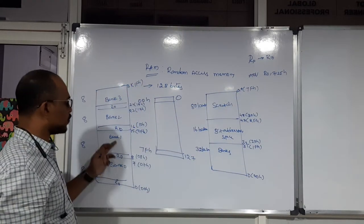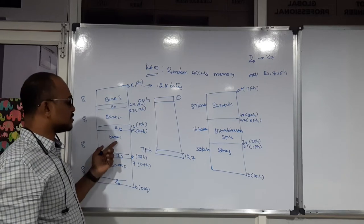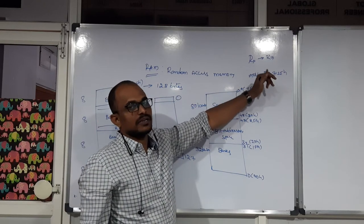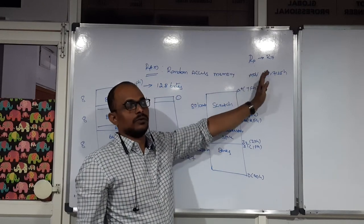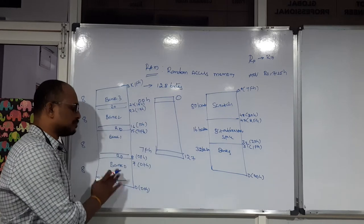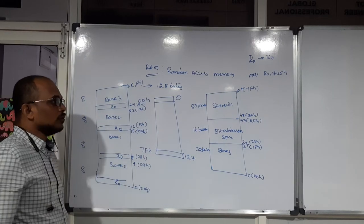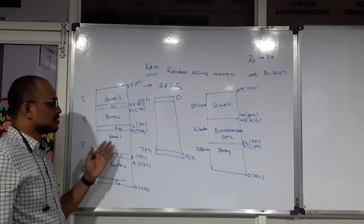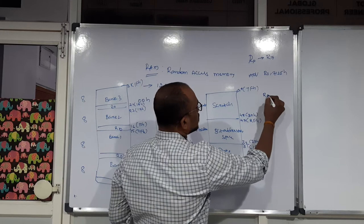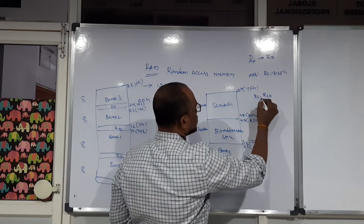Each bank provides eight locations. The consecutive locations of the banks are used by registers — R0 uses address 0, R1 uses address 1, R2 uses address 2, and so on through the next addresses of your bank. Finally, which address is used by these registers is decided by the RS0 and RS1 bits from the PSW register.